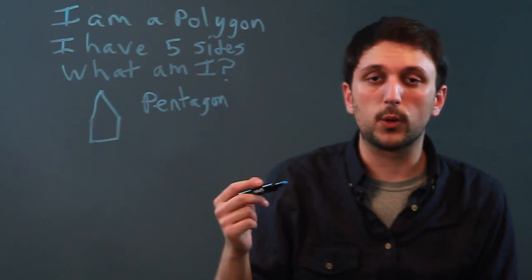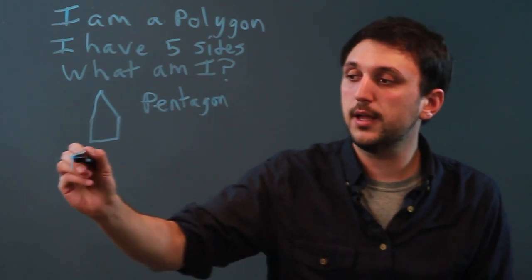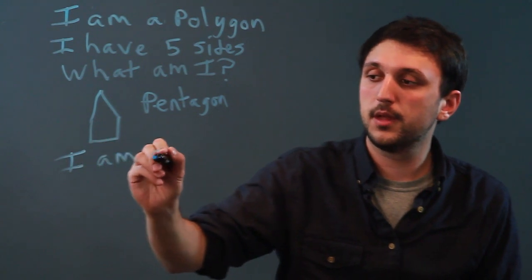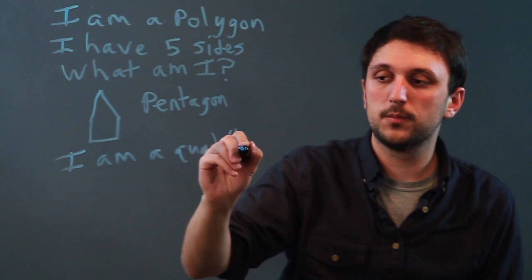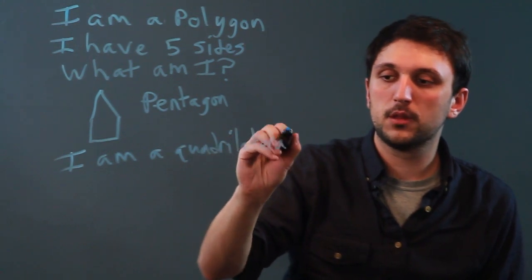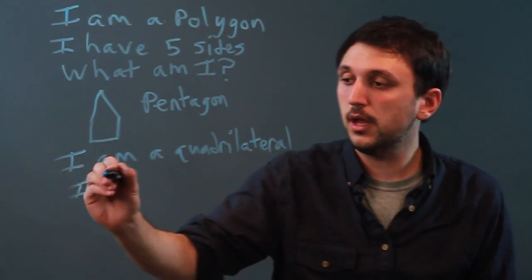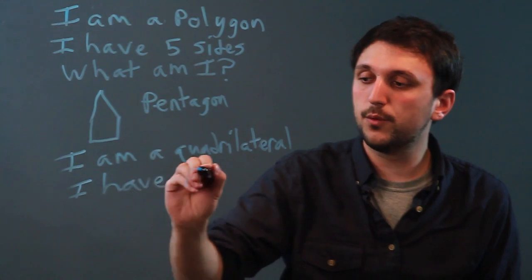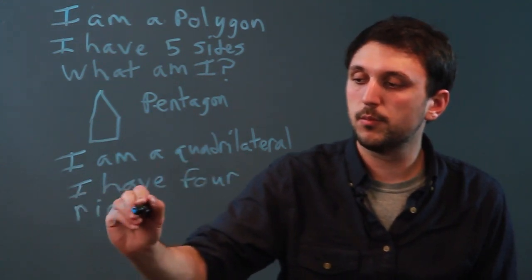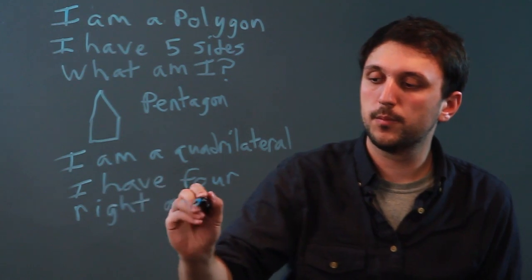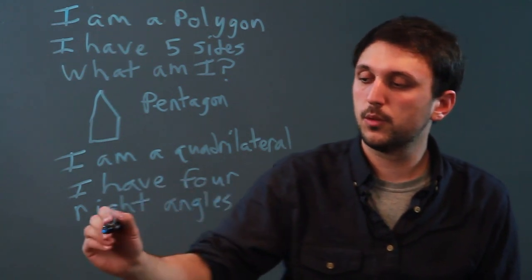And we can do one a little more complicated. Say, I am a quadrilateral. I have four right angles. What am I?